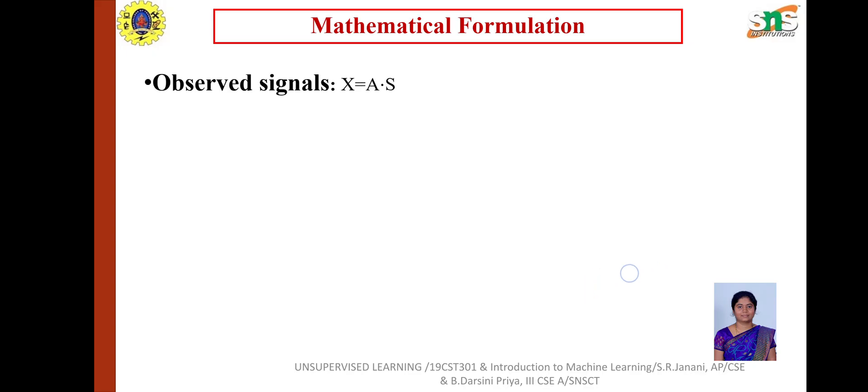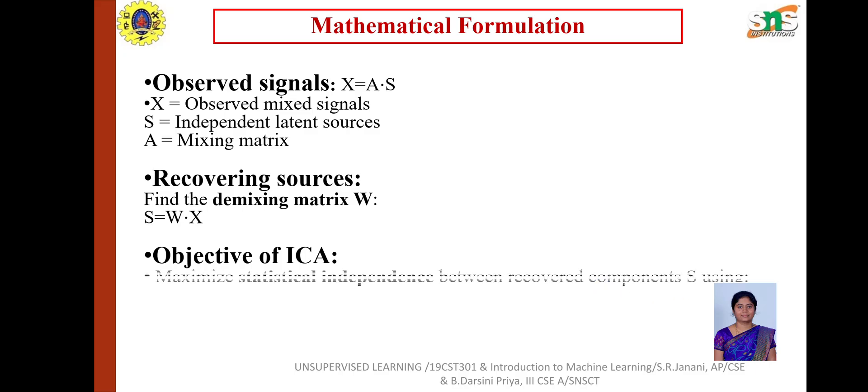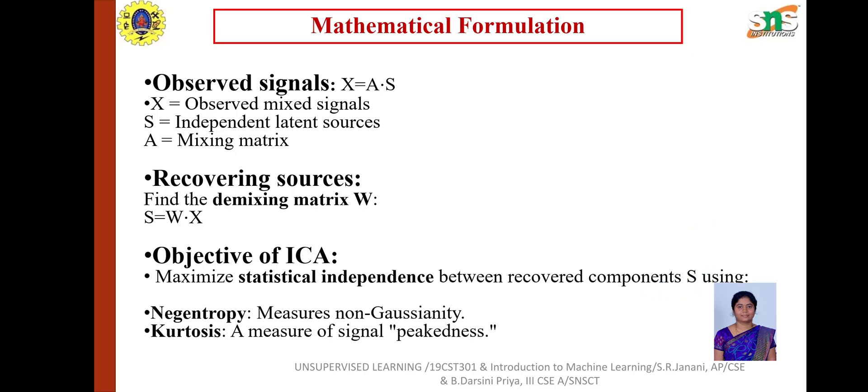Mathematical formulation: Observed signal X = A·S. Recovering sources involves finding the demixing matrix: S = W·X. The objective of ICA is to maximize the statistical independence between recovered components using measures of non-Gaussianity and signal peakness.